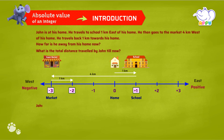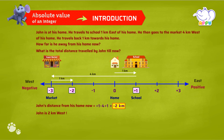To find John's distance from his home now, let's add these with the signs. Plus 1 minus 4 plus 1 equals minus 2 km. Here, the negative sign indicates west and the distance is 2 km. So John is 2 km west from his home now.